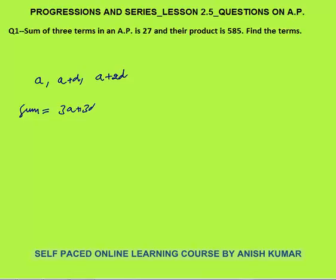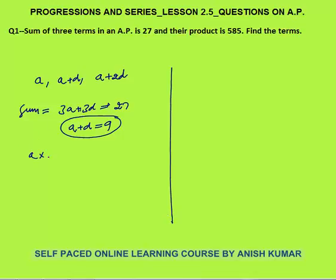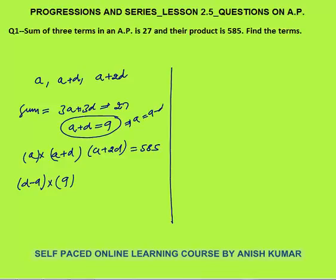If you sum them you get 3a plus 3d equals 27, which means a plus d equals 9. For the product: a times (a+d) times (a+2d) is given as 585. Substituting a+d=9, we get a = 9 minus d.